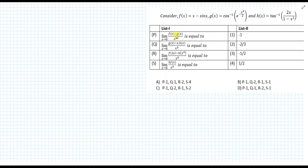In this problem, there are three functions given: f(x) is x minus sin(x), g(x) is cos inverse of e raised to power minus x raised to power 4 by 2, and h(x) is tan inverse of 2x upon 1 minus x. We have to match list 1 and list 2.